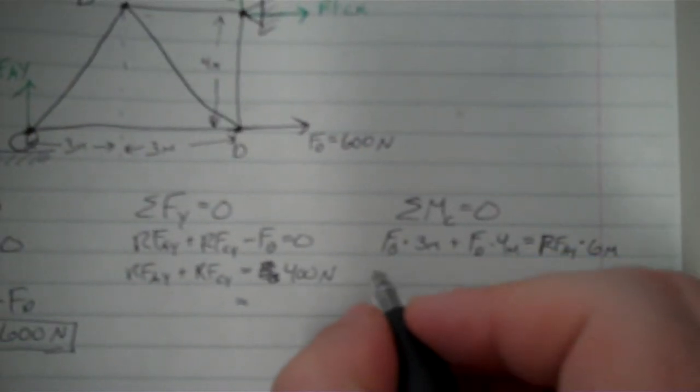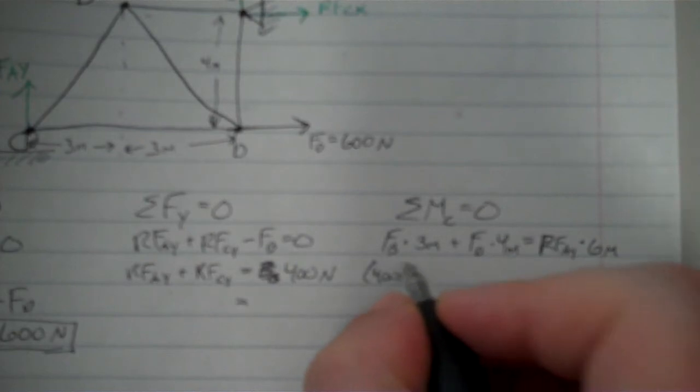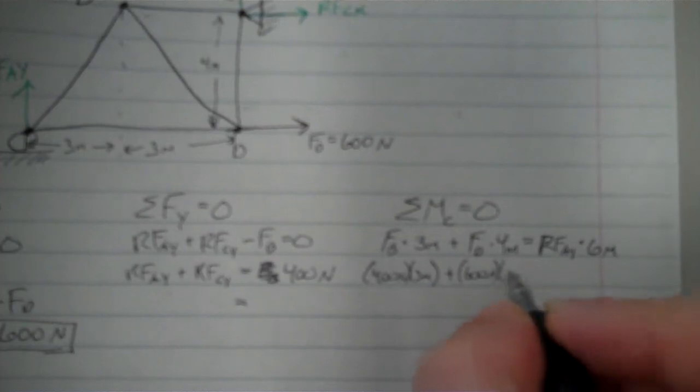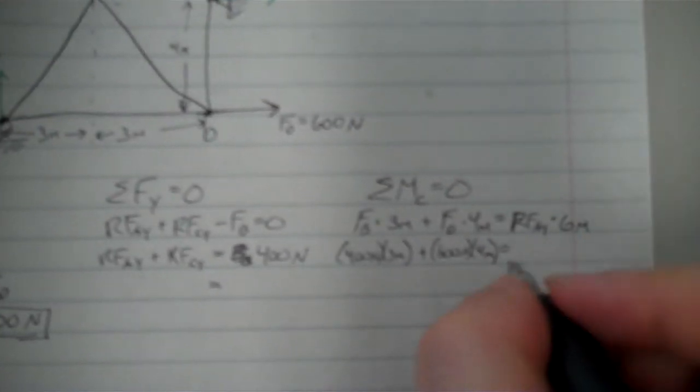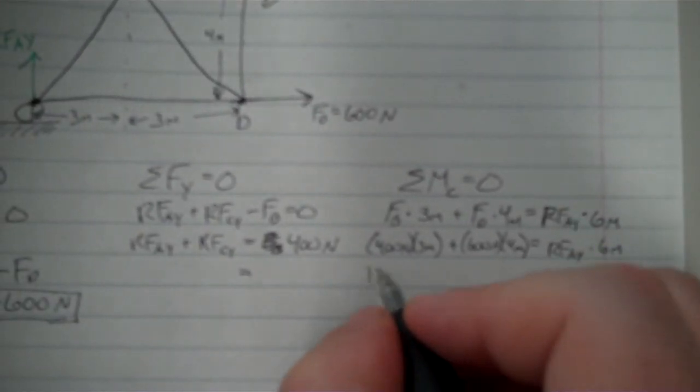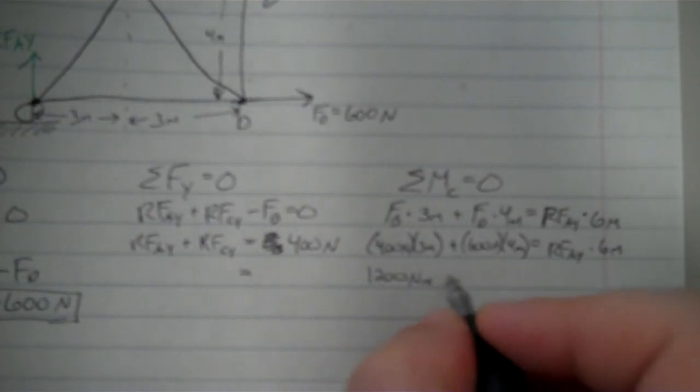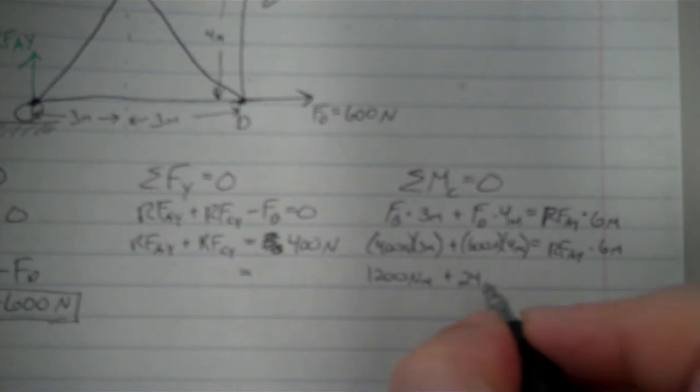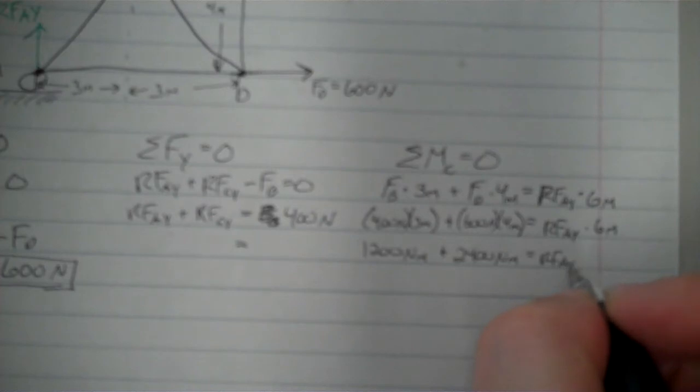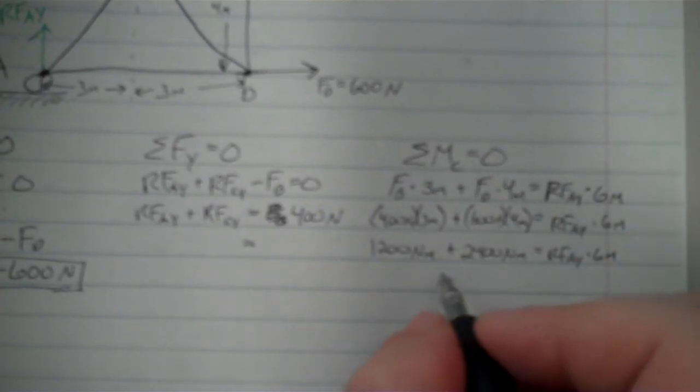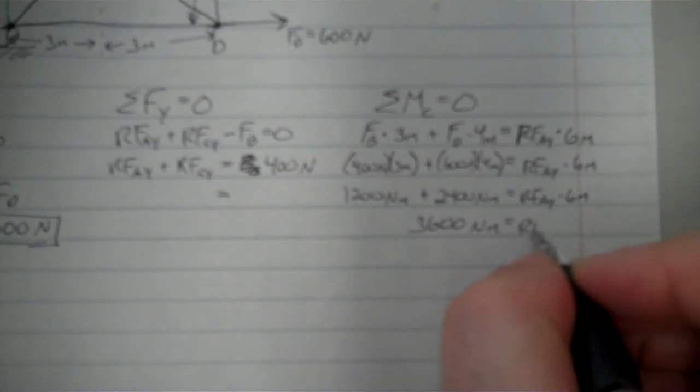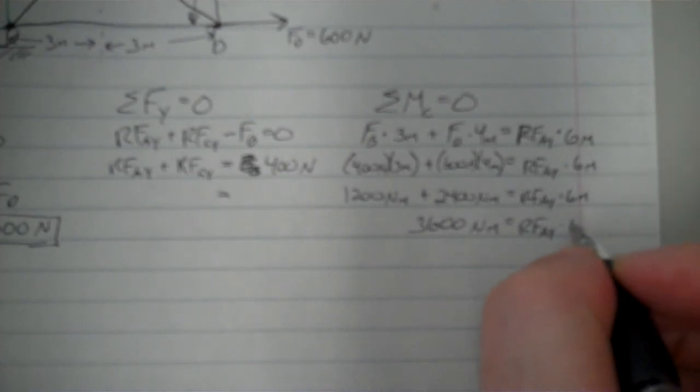So FB is 400 newtons, 3 meters, 600 newtons, 4 meters, is equal to RFAY times 6 meters. I get 1,200 newton meters plus 2,400 newton meters, RFAY times 6 meters. I get 3,600 newton meters, RFAY times 6 meters.